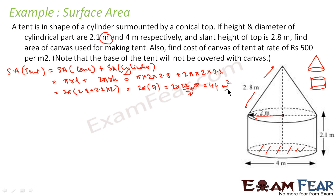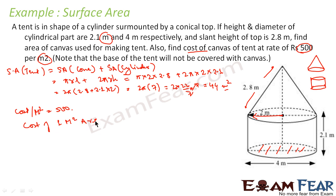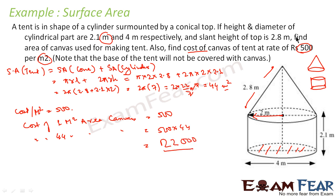The second part asks for the cost of canvas at the rate of 500 rupees per meter square. Cost of 1 m² of canvas = 500 rupees. Therefore, cost of 44 m² = 500 × 44 = 22,000 rupees. Students, please do not ignore the units. The meter square and rupees units are very crucial. Surface area must be in meter square because the lengths are in meters, and cost must be in rupees.